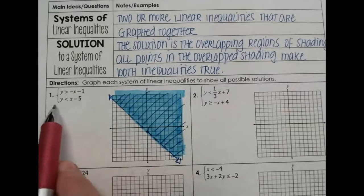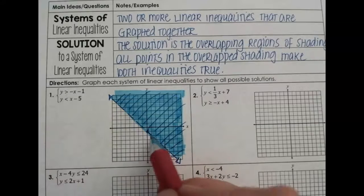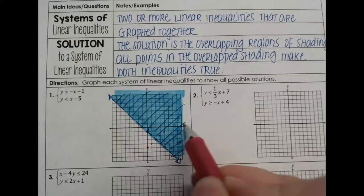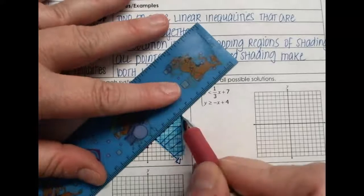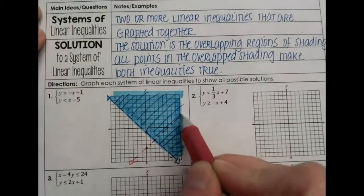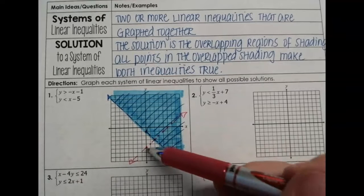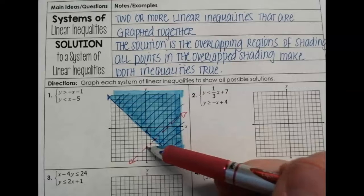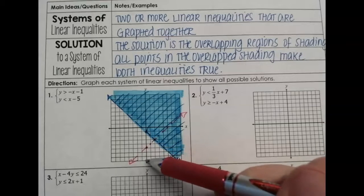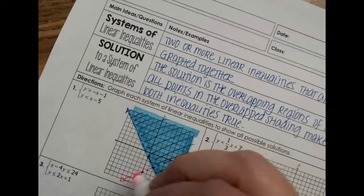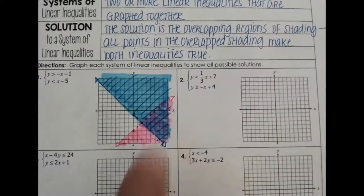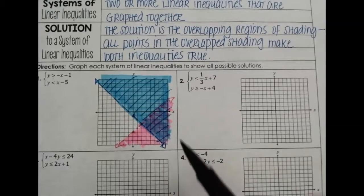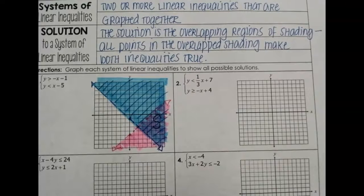Now for the other inequality — using a different color. It says y is less than x minus 5, so we start at negative 5, and our slope is positive one, going up one, right one. Remember, we are not looking for the point of intersection; we are looking where the shadings overlap. This also needs to be a dotted line as it is not equal to. The y values are less than, so less than is on the bottom side — I am going to shade everything underneath this line. Where our shadings overlap is our solution area. Any point in this solution area is going to solve our system of inequalities.